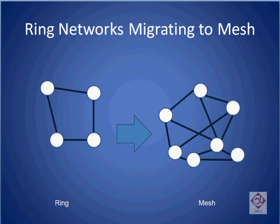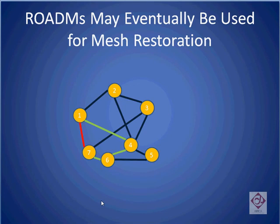Most of today's networks in the optical realm are configured as a ring. However, as time passes, most of these networks are migrating to something called a mesh, which is shown on the right. If a portion of this mesh network fails — say the connection between nodes 1 and 7 shown in this diagram — traffic can be rerouted, for example along the green path, and in doing so, no loss of service will be incurred. However, if ROADMs are to play a critical part in these mesh restoration scenarios, their switching speeds must switch from seconds today to the order of 100 milliseconds.